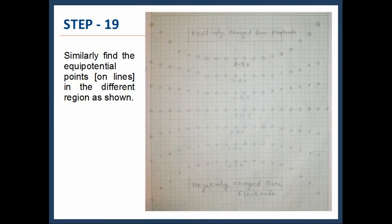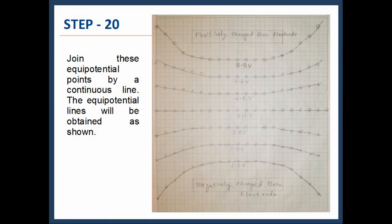Similarly, find the equipotential points and lines in different regions, as shown. Join these equipotential points by a continuous line. The equipotential lines will be obtained as shown.